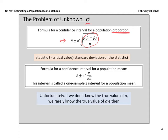For a confidence interval for a population mean, our test statistic would look like this. We'd have the sample mean and the z* value — you find z* the same way you did in proportions. But then for our standard deviation we'd take the standard deviation divided by the square root of n for our sample size. Unfortunately we don't know the true value of the mean, which means we don't know the true value of the standard deviation.